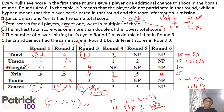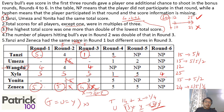So we conclude: Zeneca scored 5 in round 1 and 5 in round 2. Since Tanzi and Zeneca had the same score in round 1, Tanzi also scored 5 in round 1. Since Tanzi's total is 15 and she scored 5 in round 1, she scored 1 in round 3. Since Tanzi scored 1 in round 3, Zeneca can't score 1, so Zeneca must have scored 4 in round 3. Zeneca's total is 5 + 5 + 4 + bonuses = 24. We are left with Yonita needing scores of 5 and 2, and Umeza needing 5, 5, and 2.